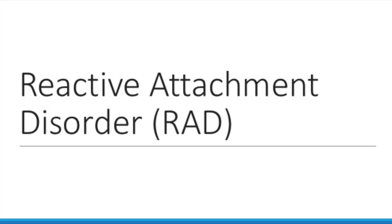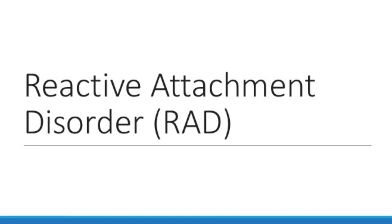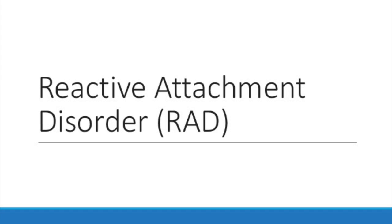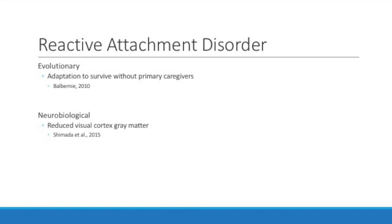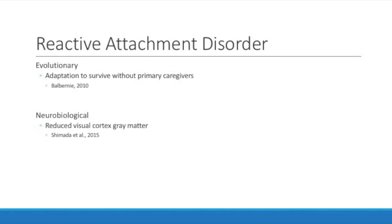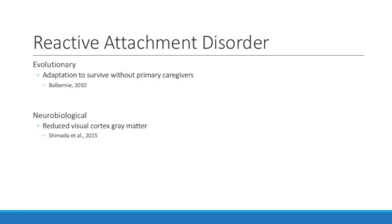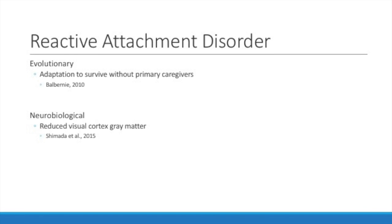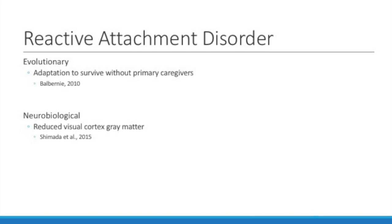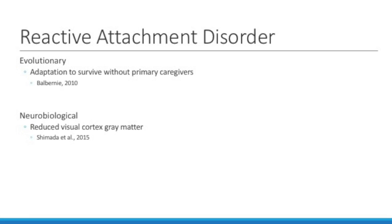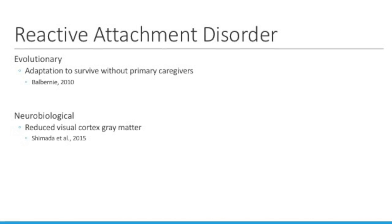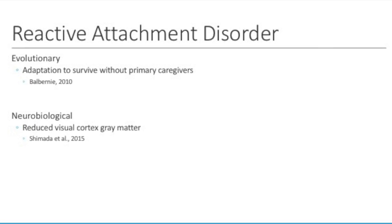Reactive Attachment Disorder, or RAD, falls under the trauma and stressor-related disorders in the DSM. I found two articles that I'll be discussing. One looks at the diagnosis from an evolutionary perspective, focusing on how RAD developed as an adaptation to survive when a child did not have primary caregivers. The second looks at whether there is reduced visual cortex gray matter in children and adolescents diagnosed with RAD.